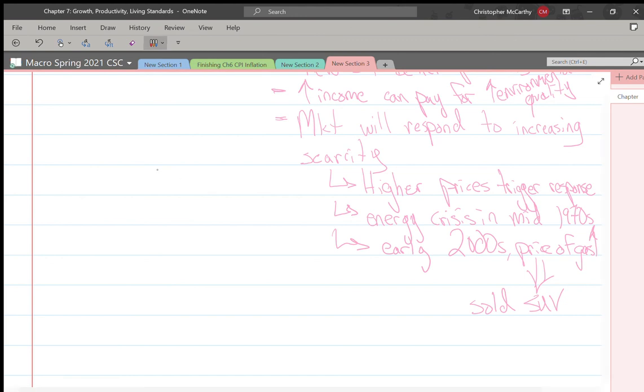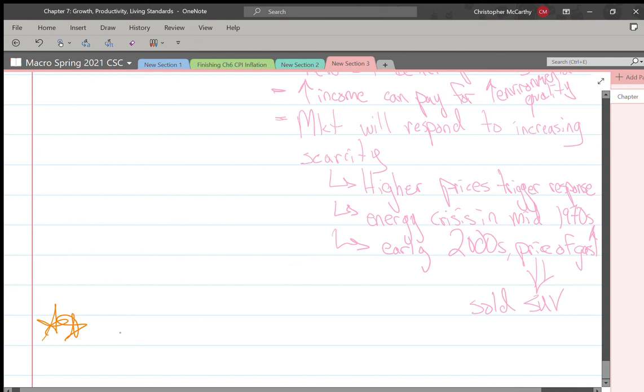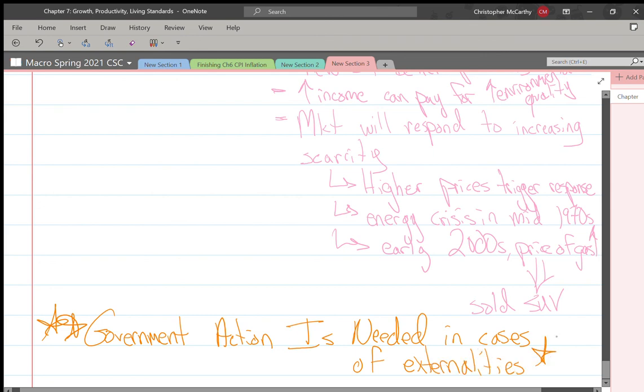However, this is all not to say that government action is not needed in cases of externalities - those situations where there's a third party, not the buyer or the seller, that's being impacted. The way in which the government reacts to that is really important. If the government comes in and says this is the specific thing you need to do, that might not be as good as the government just saying you've got to stop doing this.